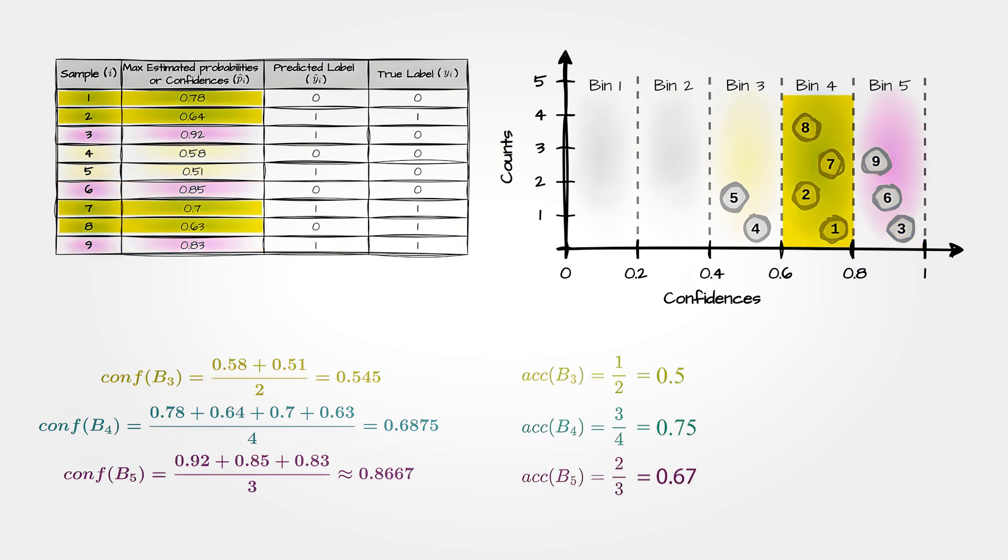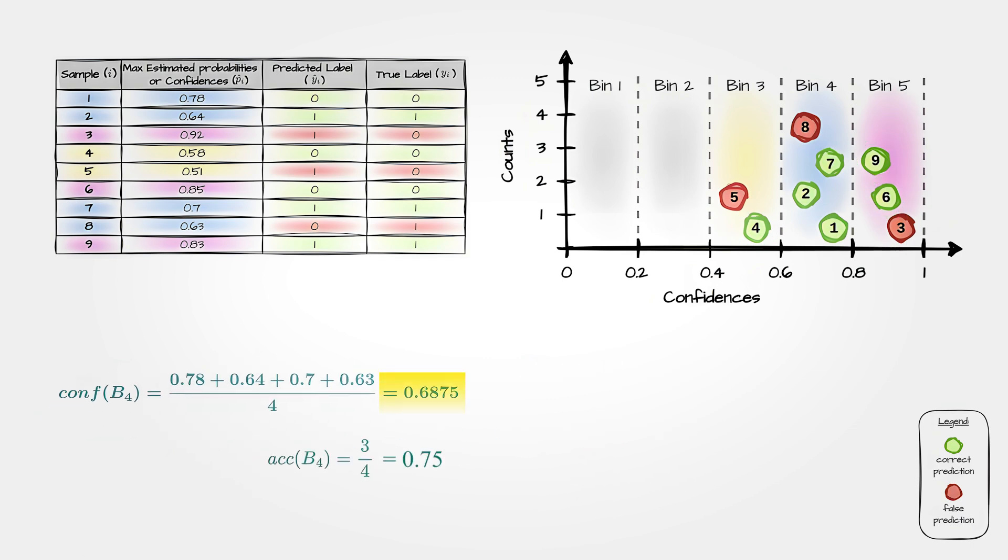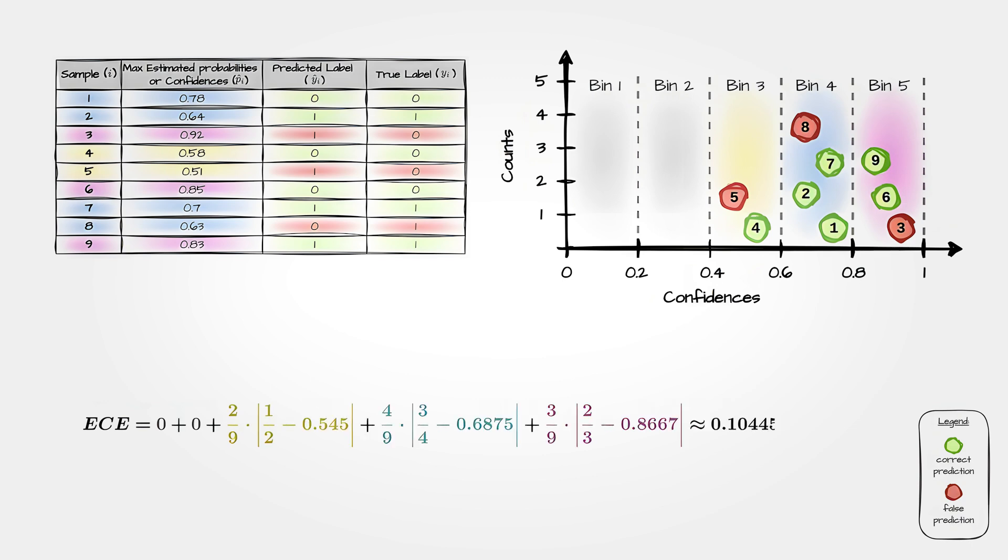We then check the actual accuracy in each group. For the predictions the model is 70% confident about, we need to confirm if about 70% of them are actually correct. We do the same for other confidence levels. Finally, we compare confidence to actual accuracy. If the model says it's 70% confident and 70% of its predictions are correct, the model is well calibrated. The expected calibration error measures how close the model's confidence is to the actual accuracy across all these groups. The smaller the expected calibration error, the better the model's confidence matches its performance.